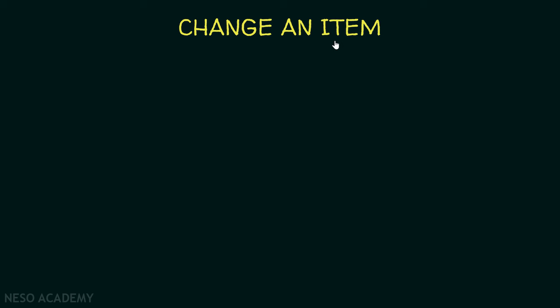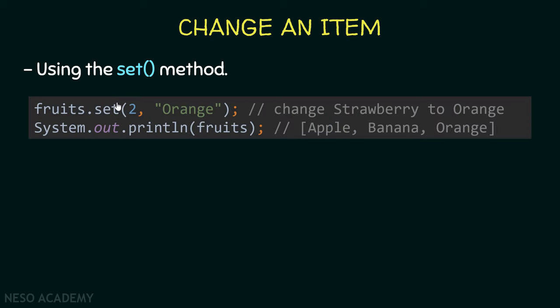To change an item in the ArrayList, we use the set() method, which takes two parameters: the index of the element to change, and the new value. For example, to change the third element (index 2) to 'orange', we call fruits.set(2, "orange"). This changes 'strawberry' to 'orange', so printing the ArrayList shows the updated output.